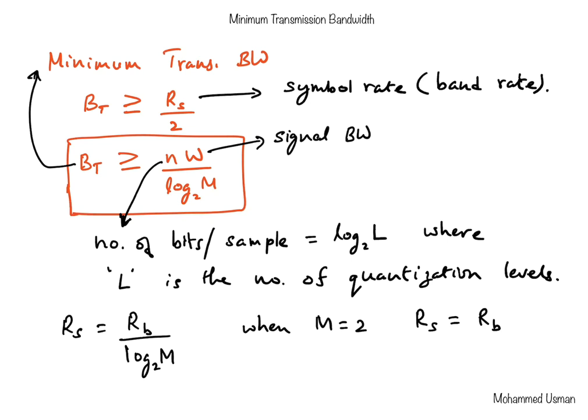For binary transmission, one symbol equals one bit, so the symbol rate equals the bit rate. For 4-ary transmission each symbol is 2 bits; for 8-ary each symbol is 3 bits. We will work through an example problem to see how transmission bandwidth changes as we change the value of M, and how choosing appropriate values of M can control the bandwidth required.